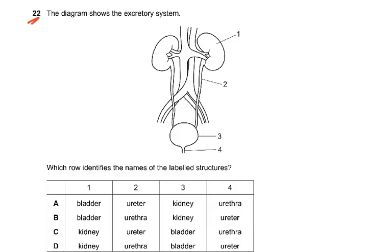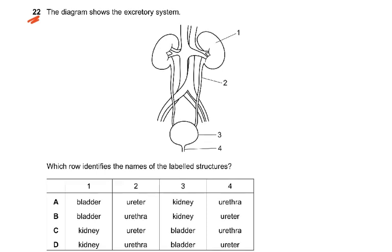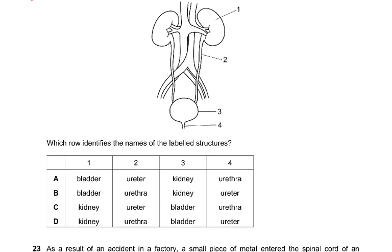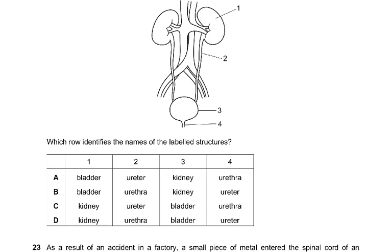Question 22. A very direct question. The diagram shows the excretory system — which row identifies the names of the labelled structures? Structure 1 is the kidney, 2 is the ureter, 3 is the bladder, and 4 is the urethra. So the answer is C.